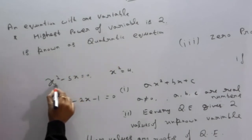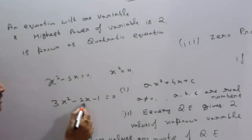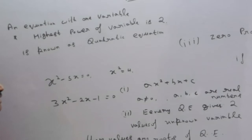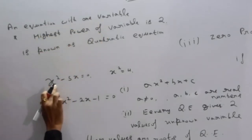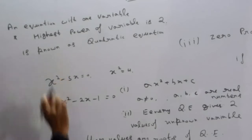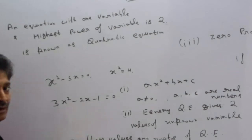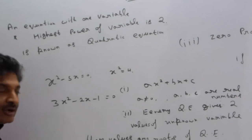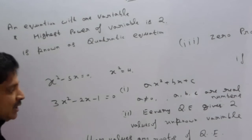Example: x squared minus 5x equals 0; x squared equals 4; 3x squared minus 2x minus 1 equals 0. Here, one variable means x — x is the one variable. Highest power of x is 2. All three are quadratic equations.